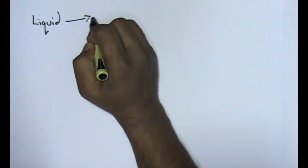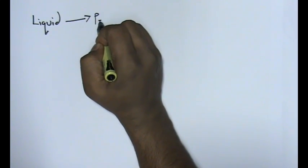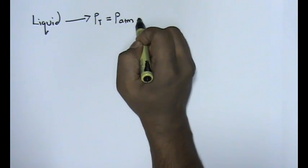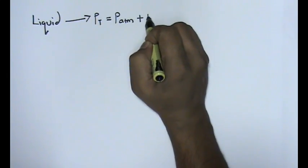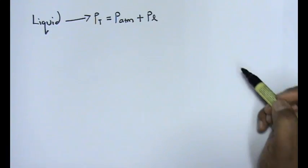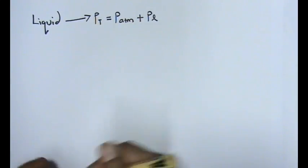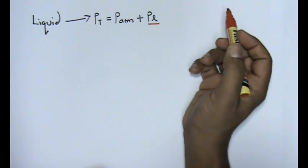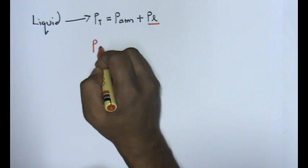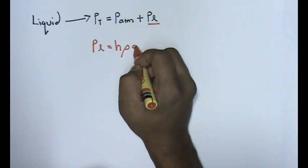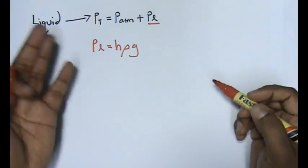The first thing that I gave you was the total pressure equals to the atmospheric pressure plus the liquid pressure. I explained to you that the liquid pressure we have here is given to us as h·ρ·g or ρ·g·h, either one, just change the placement.